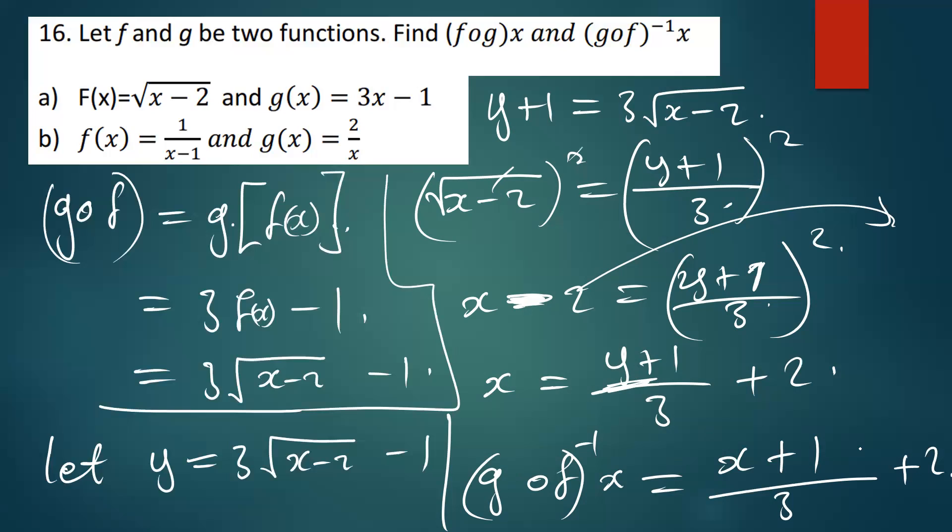So the final answer for g of f inverse of x is found by replacing y with x: g of f inverse of x equals x plus one over three, squared, plus two. That's how you solve this question.